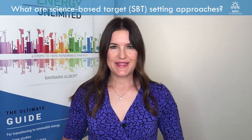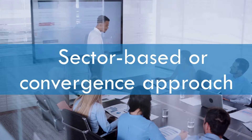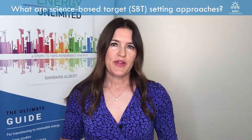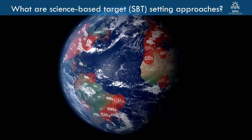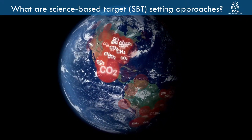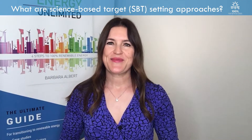There are three science-based target setting approaches. The first is the sector-based or convergence approach. In this approach, the global carbon budget is divided by sector, and then emission reductions are allocated to individual companies based on its sector's budget.